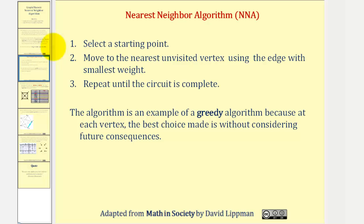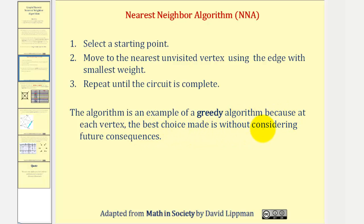Here are the steps. Number one, we select a starting point. Two, move to the nearest unvisited vertex using the edge with the smallest weight. Three, repeat until the circuit is complete. The nearest neighbor algorithm is an example of a greedy algorithm because at each vertex, the best choice is made without considering future consequences.